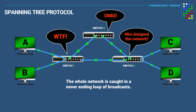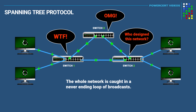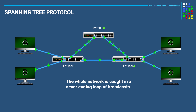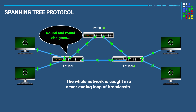The whole network will be caught up in a never-ending loop of broadcasts, which is known as a broadcast storm. When this happens, the network can't do anything because of the constant broadcasts, and the entire network will come to a grinding halt. This is why the spanning tree protocol was developed.